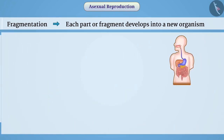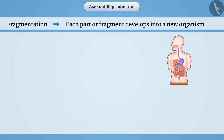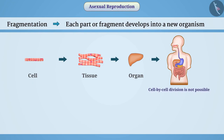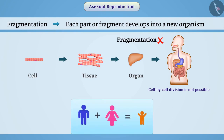Other multicellular organisms have complex body structures. In such cases, there is formation of tissue from cells and formation of organs from tissues. The location of organs is fixed in the body, due to which cell-by-cell division of these organisms is not possible. Therefore, fragmentation is not seen in such organisms — instead, we see a complex process of reproduction.